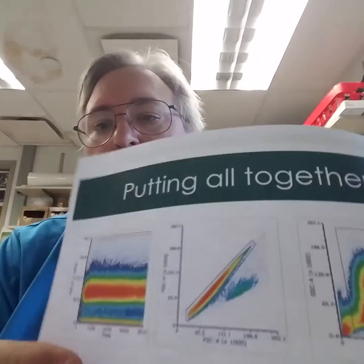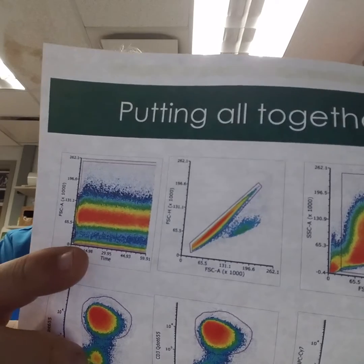This is where the FMO controls might come into play. Here's an example: I start off with this first gate, which is a time gate. I look at time versus scatter to make sure I had an even flow. I use that gate to eliminate things at either end which might have been problems, or if there's discontinuity within the population, I can remove that by a gating strategy. There's also automated software that will do that for you.